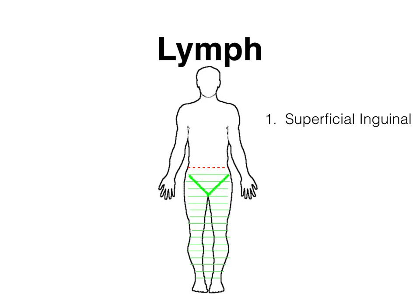It's going to be easy to remember that the gonads don't drain to the superficial inguinal lymph nodes, and that'll become more clear as we go through this video. As for the lateral ankle or lateral foot, you kind of have to just memorize that. The mnemonic to remember the superficial inguinal lymph node drainage is that it drains everything south of an innie — referring to an innie belly button. SI for superficial inguinal drains to the superficial inguinal lymph nodes found near the groin.